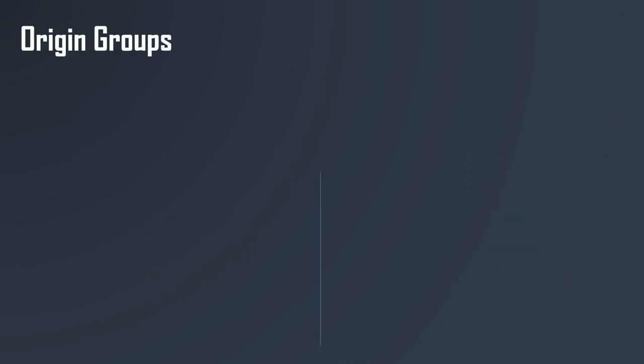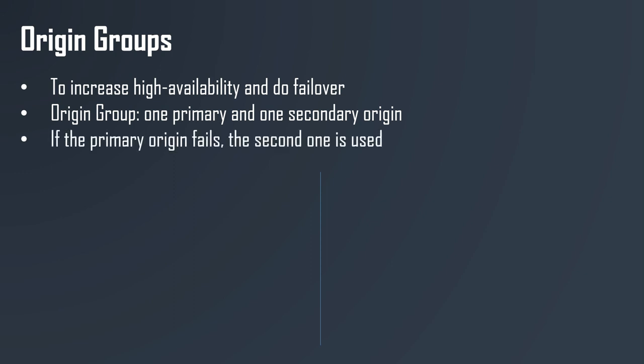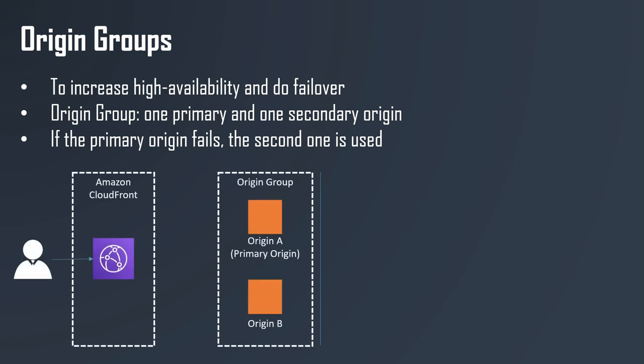We can also set up origin groups. This is a different use case — it is to increase high availability and do failover in case one origin has failed. An origin group consists of one primary and one secondary origin. If the primary origin fails, CloudFront will try to failover to the second origin. For example, CloudFront sends a request to the first EC2 instance, and if there is an error, it will retry the same request on origin B, which will hopefully respond with an OK status code.